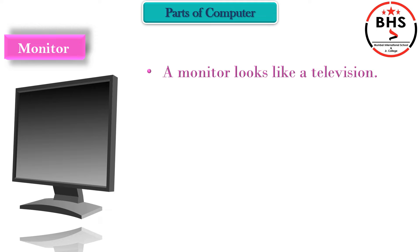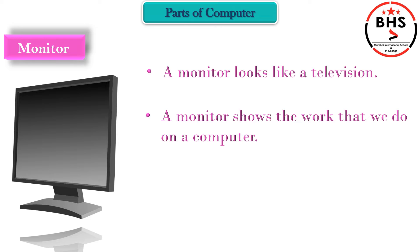A monitor looks like a television, that is a TV screen. A monitor shows the work that we do on a computer. Whatever we type or click or select, everything is shown on the monitor screen. It is an output device, meaning the device that shows the result of the work done on a computer. Monitor is the main output device.